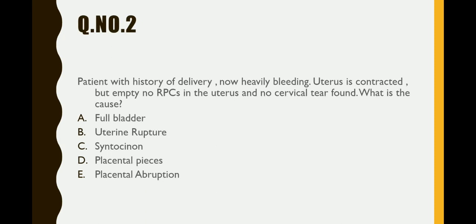Question number 2: a patient with a history of delivery is now heavily bleeding. The uterus is contracted but empty, no retained products of conception are present, and no cervical tear was found. What is the cause? Options include full bladder, uterine rupture, syntocin, and placenta pieces.